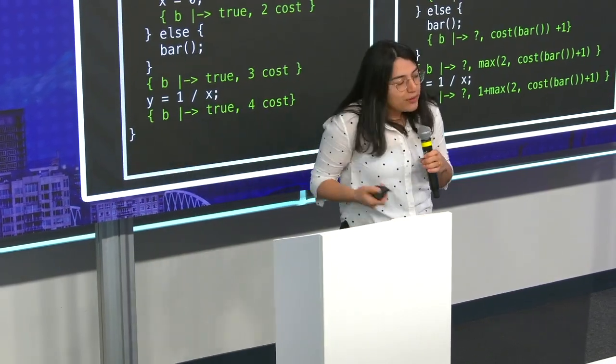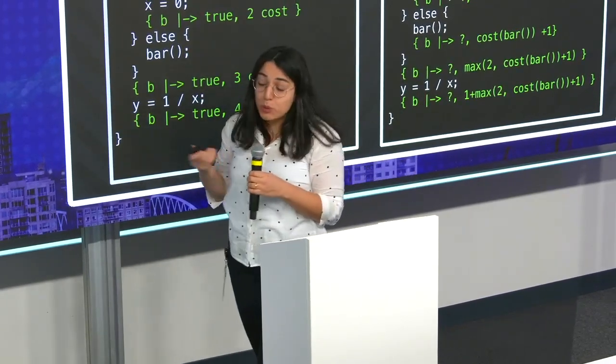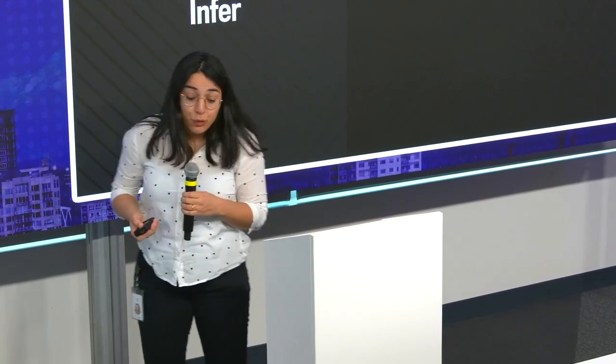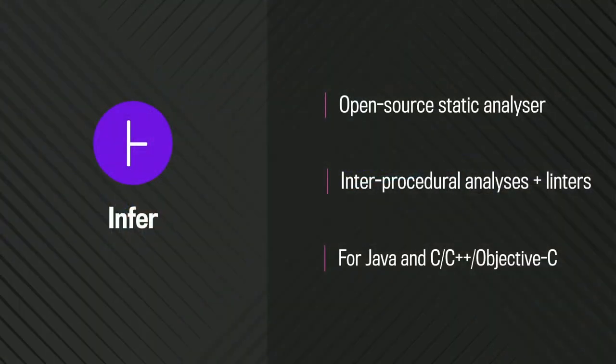I will tell you about Facebook's state-of-the-art static analysis tool, which is called Infer. It is open source, and it can detect many non-trivial functional issues like use-after-free and null pointer exceptions, but also static execution cost analysis. And it works for Java and the Clang family of languages — C and C++.